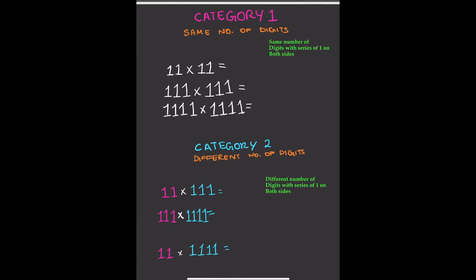Hey guys, welcome back to my channel — Lesson 8. Do you guys know how to multiply with a series of 1s on both sides? I'll show you. Let's start with 11 times 11. Before we go into that, there are two categories in this topic. The first category is where there's the same number of digits on both sides, and the second category is where there's a different number of digits on both numbers. We're going to start with category number one.